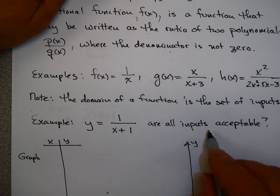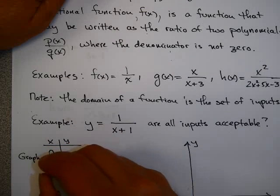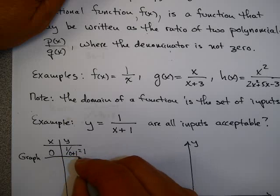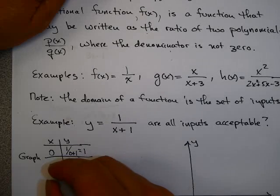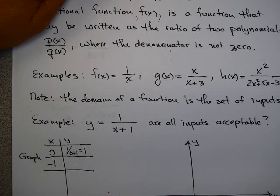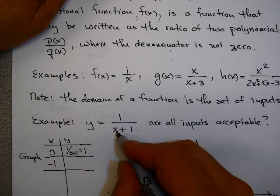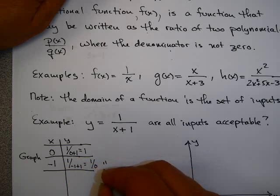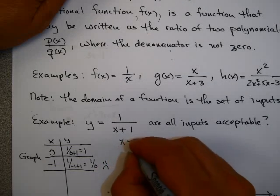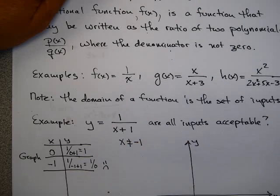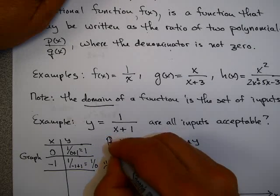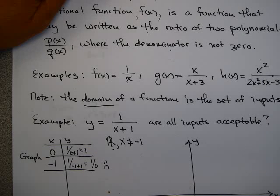Are all values of x acceptable? If I put in 0, I get 1 over 0 plus 1, which equals 1 — so that was acceptable. But if I put in negative 1, I get 1 over negative 1 plus 1, which is 1 over 0. That's trouble — we can't let x equal negative 1. So x is not equal to negative 1, and the domain is all real numbers except for negative 1.